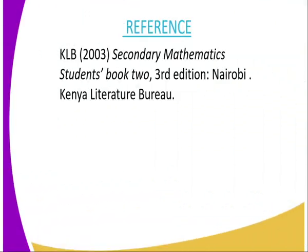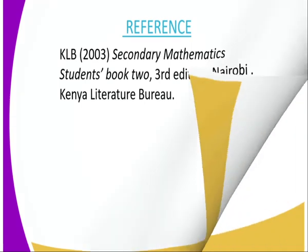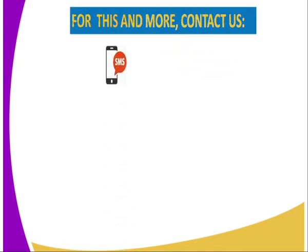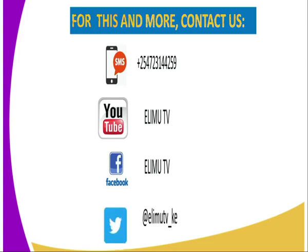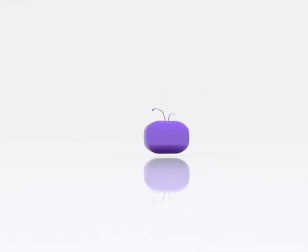For reference, you can refer to Secondary Mathematics Student Book Two, and the publisher is the Kenya Literature Bureau. For more information, you can reach us at Elim TV using the following addresses. You can use SMS using the number which is well displayed, you can use YouTube, you can use Facebook platform at Elim TV, and also Twitter at Elim TV underscore KE. Thank you for joining me in this lesson. Until next lesson, bye-bye.